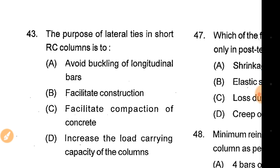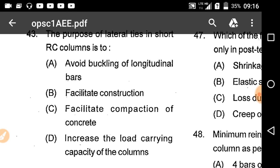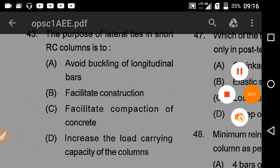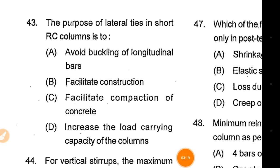Question 43: The purpose of lateral ties in a short RC column is to provide lateral confinement. The purpose of lateral ties in a short column is to confine the concrete.